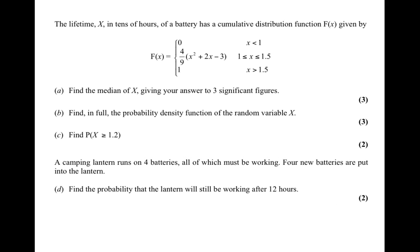The last part tells us that a camping lantern runs on four batteries, all of which need to be working, and four new batteries have just been put in. We want the probability the lantern is still working after 12 hours. The probability one battery is still working is P(x ≥ 1.2) = 47/75, so the probability all four are still working is (47/75)⁴.